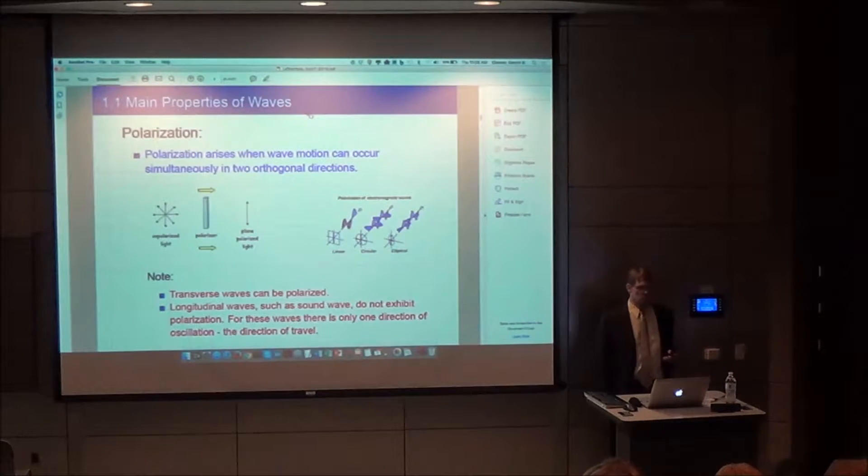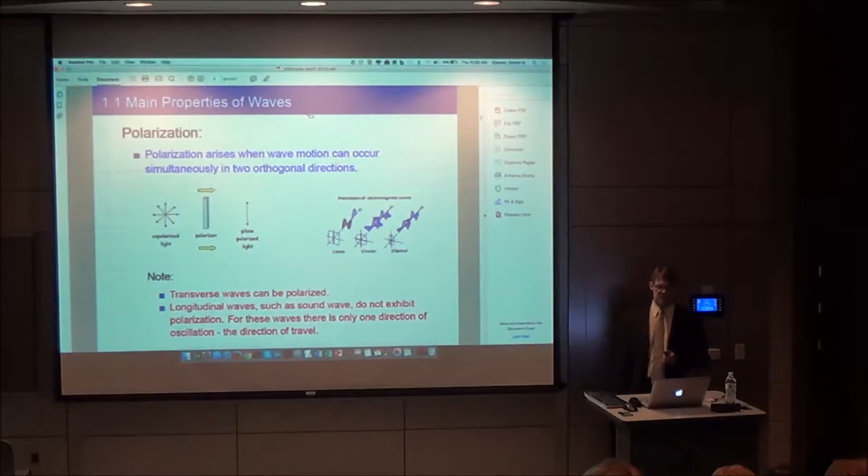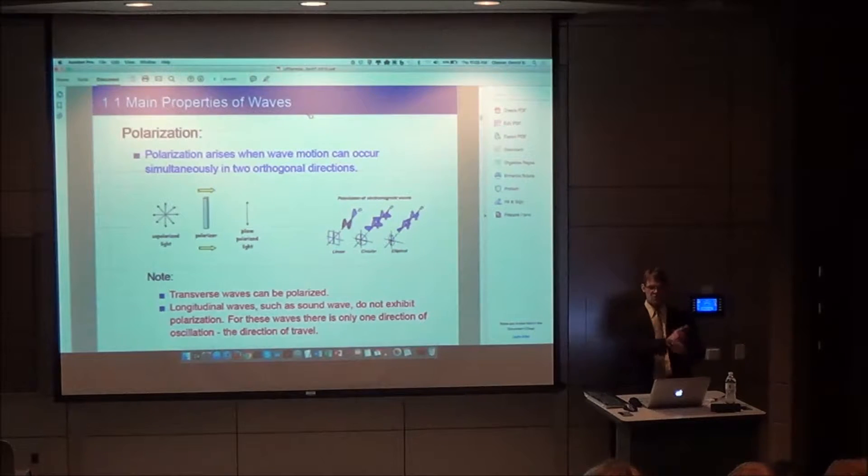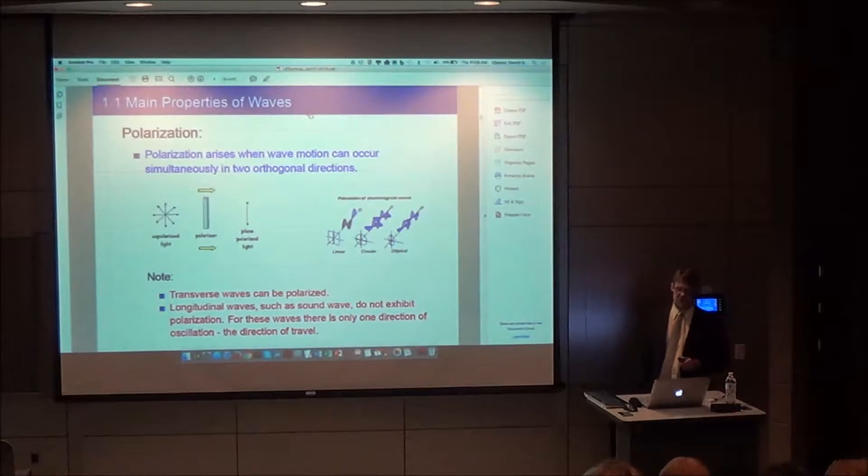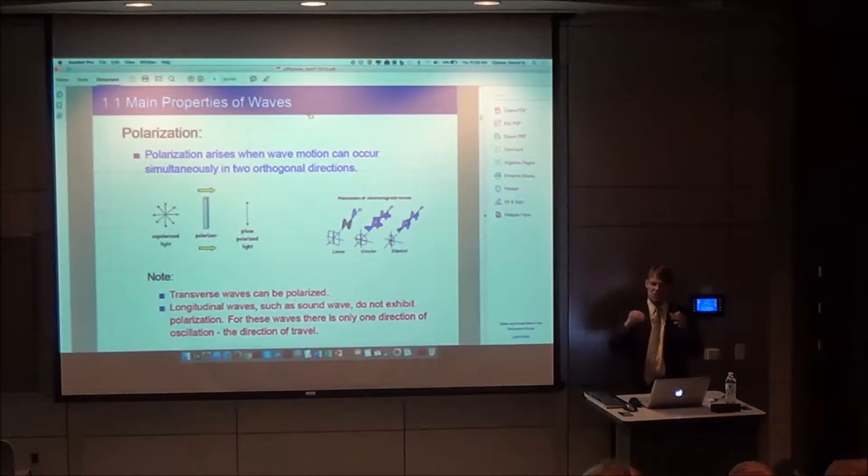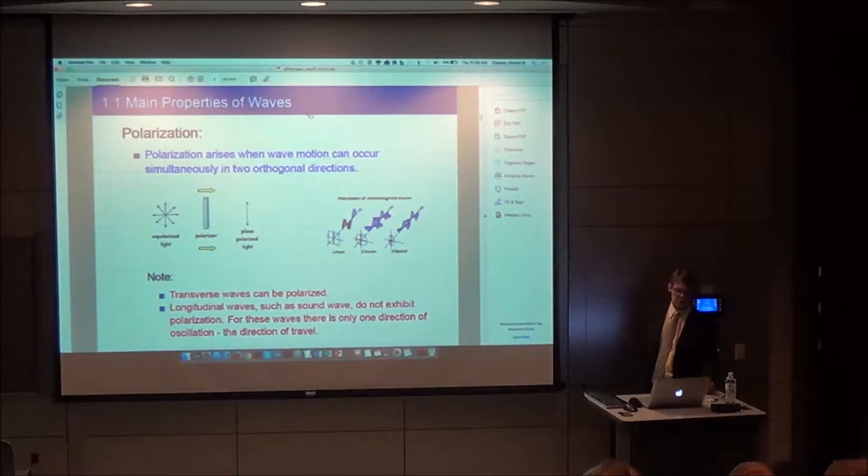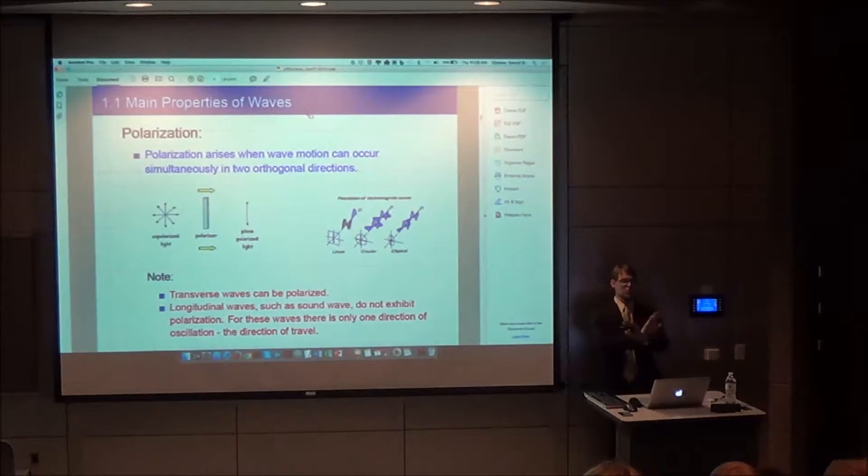There's also the property of polarization. Polarization arises when wave motion can occur simultaneously in two orthogonal directions. You can have unpolarized light where E and B fields are all over, or plane polarized light where the E field is in a particular direction. These glasses act as polarizers and reduce glare by polarizing light. Transverse waves can be polarized. Longitudinal waves, such as sound waves, don't exhibit polarization.